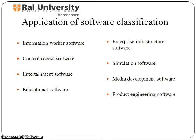Information worker software lets users create and manage information, often for individual projects within a department. Content access software is used primarily to access content without editing, but may include software that allows for content editing. Educational software is related to content access software but has content and features adapted for use by educators or students. Simulation software simulates physical or abstract systems for research, training, or entertainment purposes.